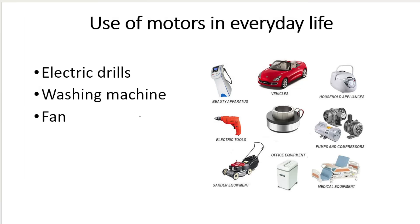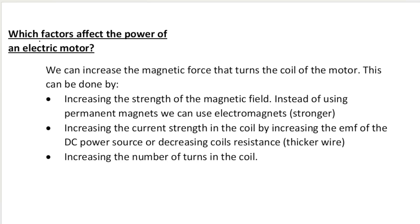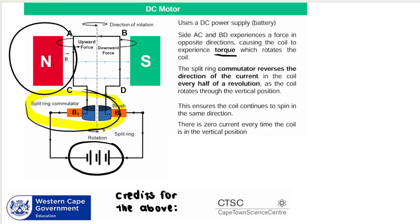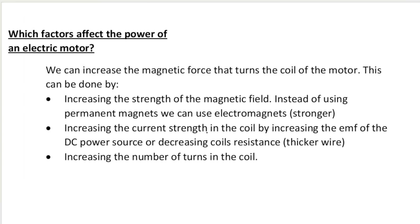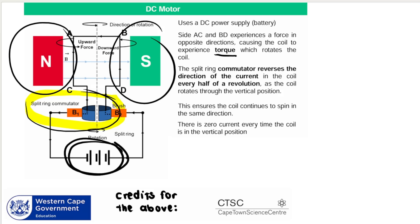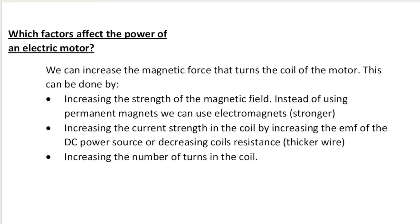There are some uses of motors in everyday life — fans, power tools like electric drills, and even washing machines. A question they love asking is: which factors affect the power of an electric motor, or how do you increase the speed of rotation? You can increase the strength of the magnetic field by using stronger magnets, increase the current strength by increasing EMF or decreasing the coil's resistance — such as using thicker wire — or increase the number of turns in the coil.